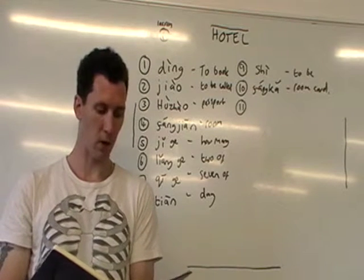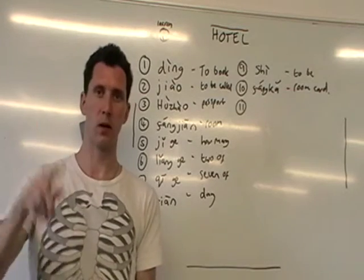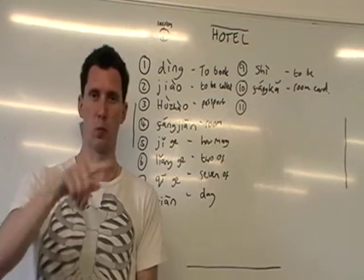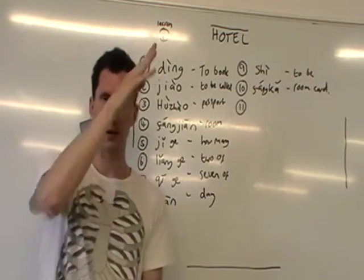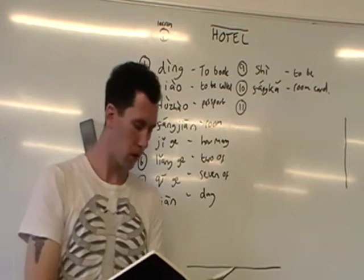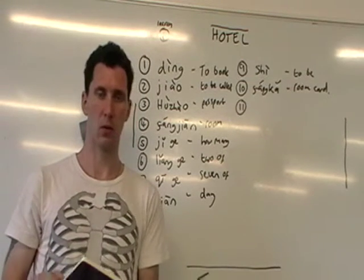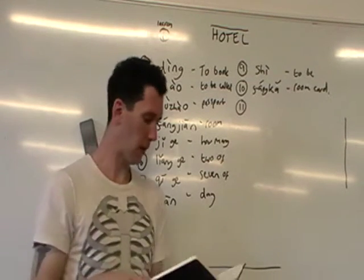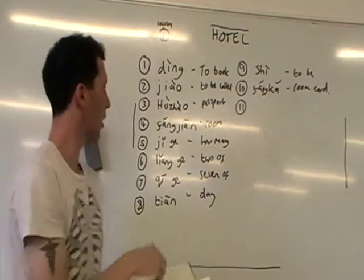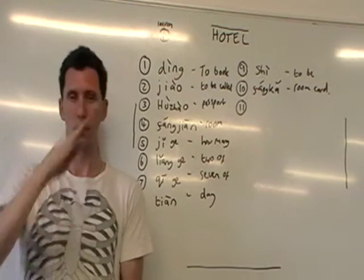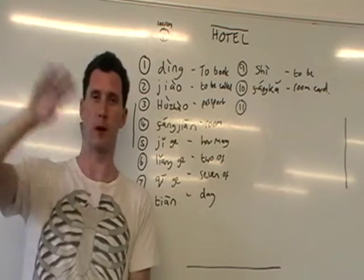Next phrase: 'we booked rooms.' Instead of I (wǒ), it's we — wǒmen, wǒmen. Then wǒmen dìng le with the same past-tense ending. And then rooms is fángjiān. So the full phrase is wǒmen dìng le fángjiān — we booked rooms.